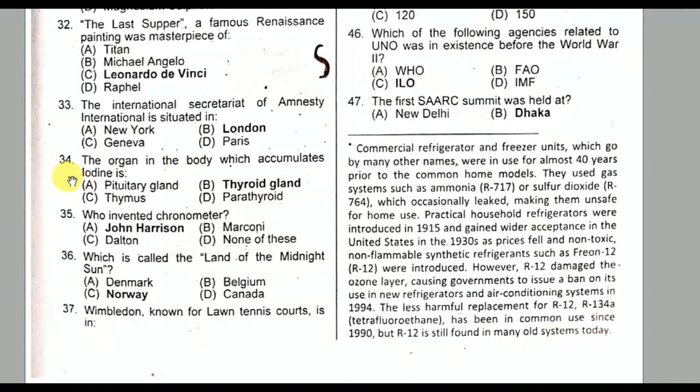Question number thirty-five: Who invented the chronometer? John Harrison invented the chronometer. Question number thirty-six: Which country is called the land of the Midnight Sun? It is Norway. Option C is the correct option.